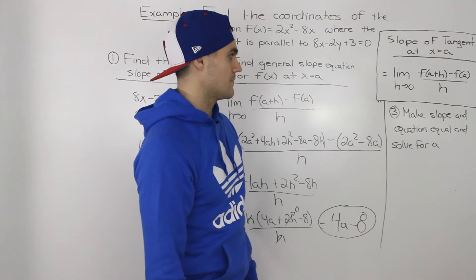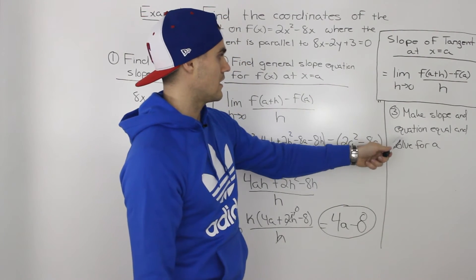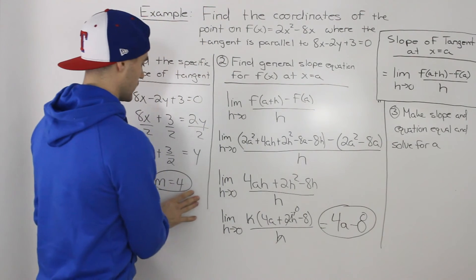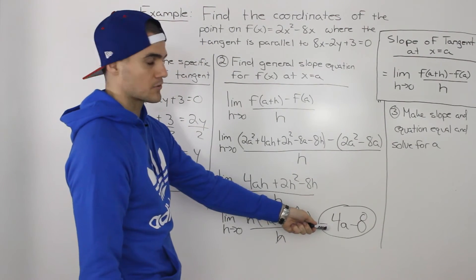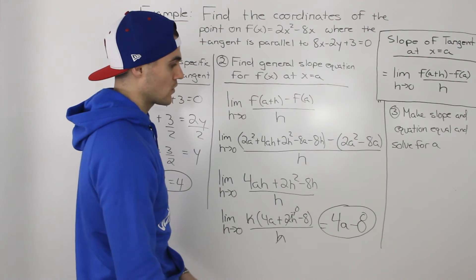And then our third and final step is we just have to make the slope from our first step equal to the equation in our second step, and then just solve for a.